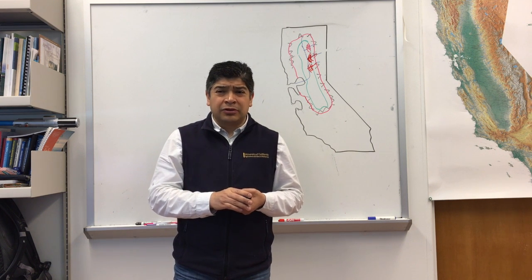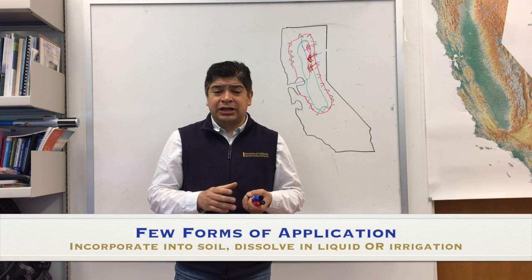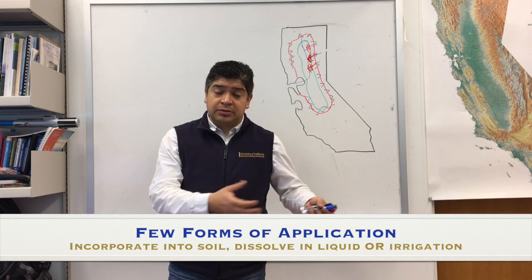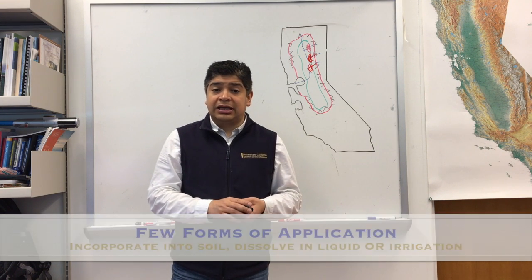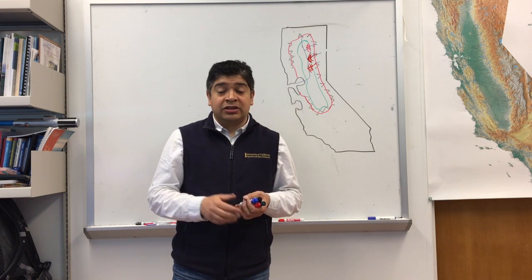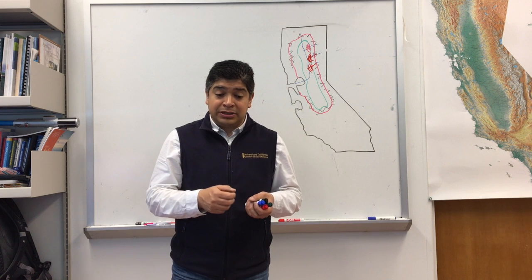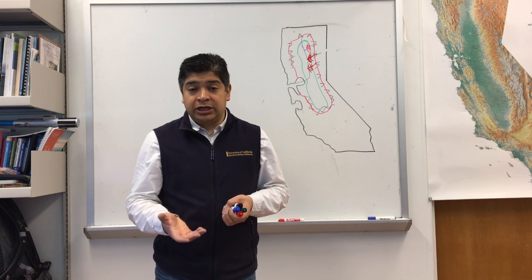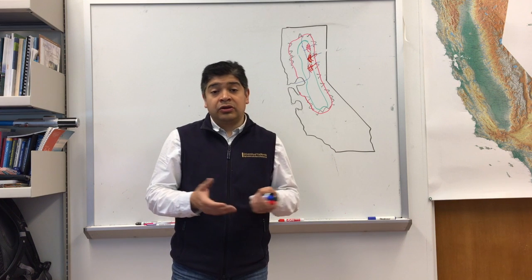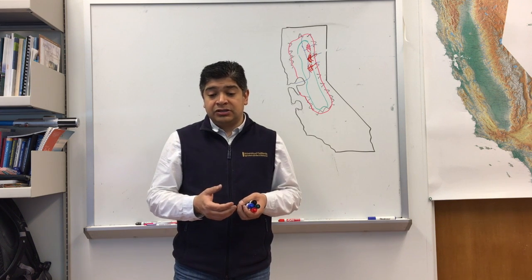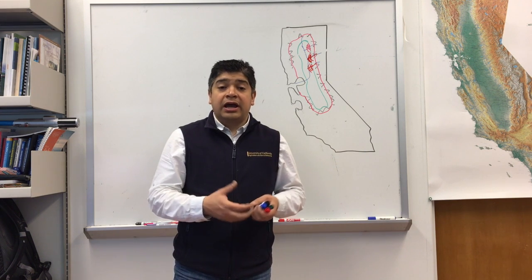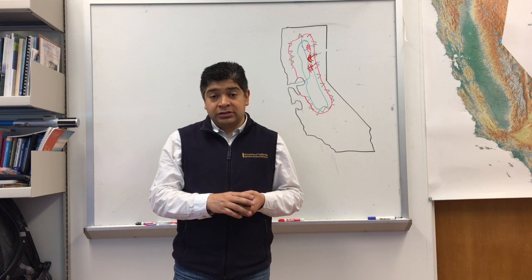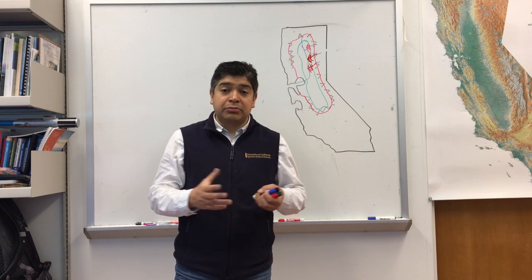So, how do we apply them? Well, we can actually mix it in the soil and leave it there. Sometimes we actually dissolve the pesticides as we are applying our irrigation. The other way is that we can mix it with water and spray it into our fields or into our backyard.